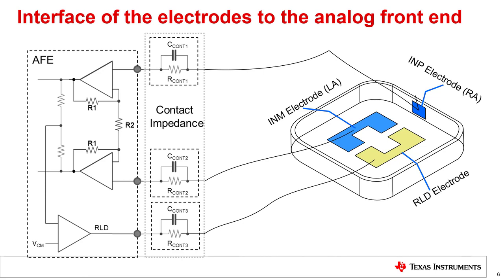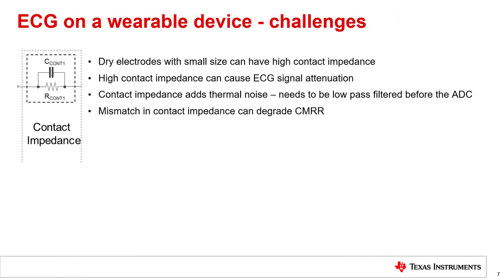Here we see the same electrode interface as previously shown, but with a contact impedance introduced between each electrode and the corresponding pin of the analog front end. Such a contact impedance results from the contact of the electrode to the skin and is depicted as a parallel resistor and capacitor. The contact impedance plays a significant role in ECG signal quality and governs several aspects of the system design. A wearable device has dry electrodes of a small size, and factors like poor contact with the electrodes and dry skin can result in a scenario where the contact impedance is high. Getting good ECG signals in such a scenario of high contact impedance can be challenging.